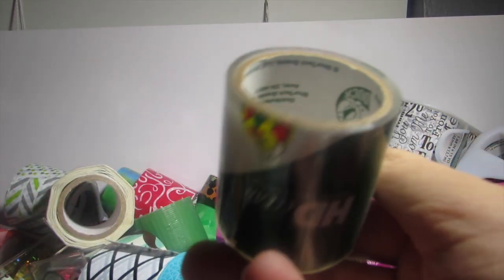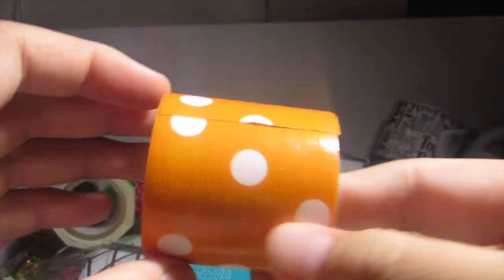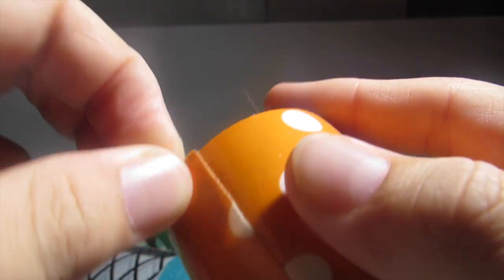Then there's this ornaments one which is duck brand Christmas packaging tape. This is just a mini roll of clear tape. This is another target dollar tape. It's like orange polka dots.